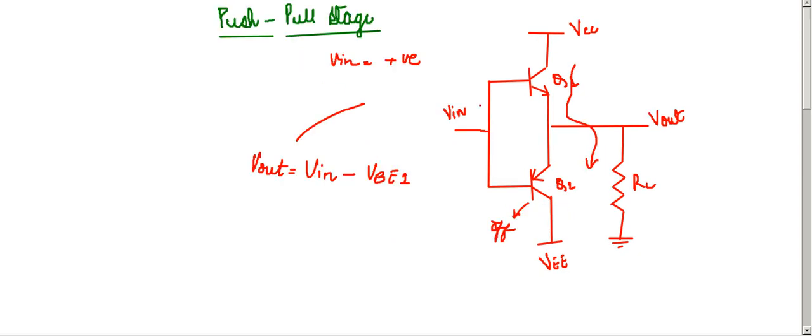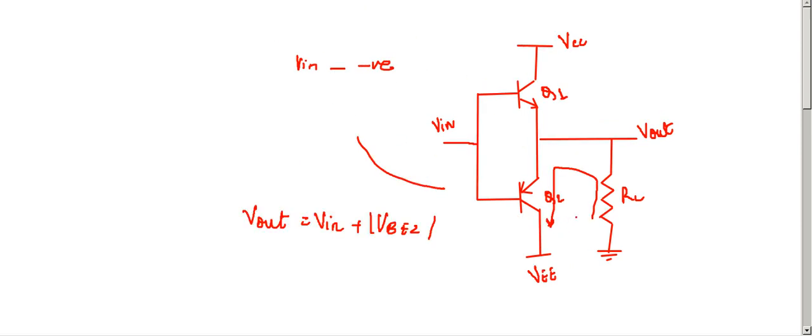I repeat: Q1 pushes the current into RL when VIN is positive, and Q2 pulls the current from RL. Hence this is known as a push-pull stage.